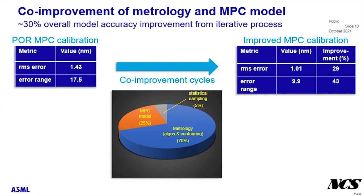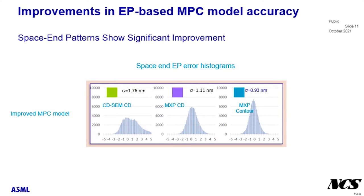The improvements came from both the model and the metrology, with the majority of the improvements being derived from the metrology algorithm. The EPE distribution for space end structures was improved by building the models using MXP contours. When we used CD-SEM, the distribution of errors was wide and also was not normal, indicating perhaps bimodal or other measurement artifacts. With the MXP contour, we were able to get a much narrower distribution that is much more normal, indicating that the residual errors are distributed in a fairly random fashion.